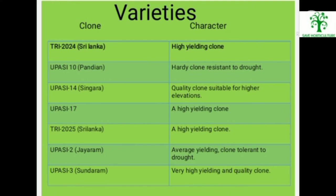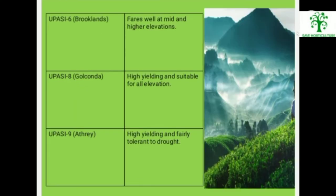UPASI-10 Pandanian — hardy clone resistant to drought. UPASI-14 Singara — quality clone stable for higher elevations. UPASI-17 — high yielding clone. UPASI-2 Jain Ram — average yielding clone tolerant to drought. UPASI-3 Sundaram — very high yielding and quality clone. UPASI-6 Brooklyn — fares well at mid and higher elevations. UPASI-8 Golioquanda — high yielding and suitable for all elevations. UPASI-9 A3 — high yielding and fairly tolerant to drought.